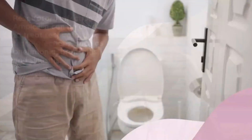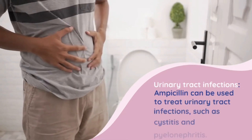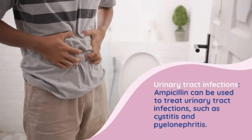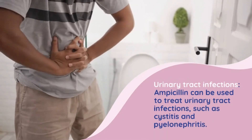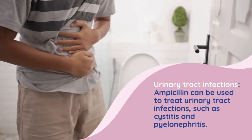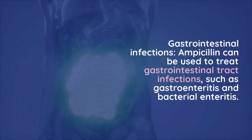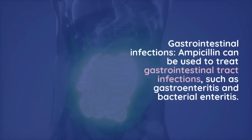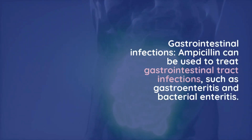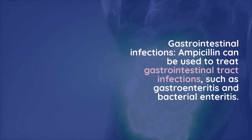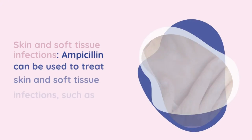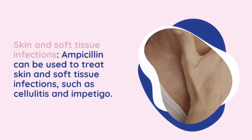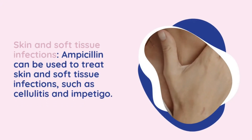and sinusitis. Urinary tract infections: ampicillin can be used to treat urinary tract infections such as cystitis and pyelonephritis. Gastrointestinal infections: ampicillin can be used to treat gastrointestinal tract infections such as gastroenteritis and bacterial enteritis.